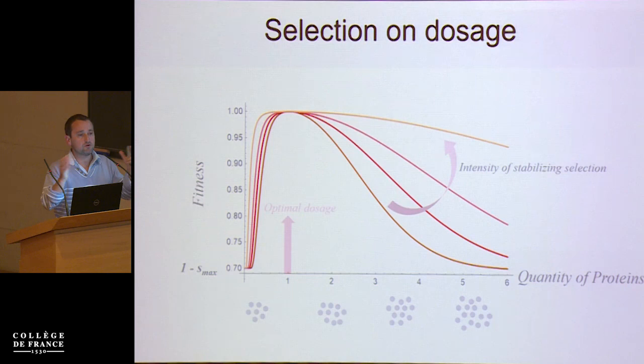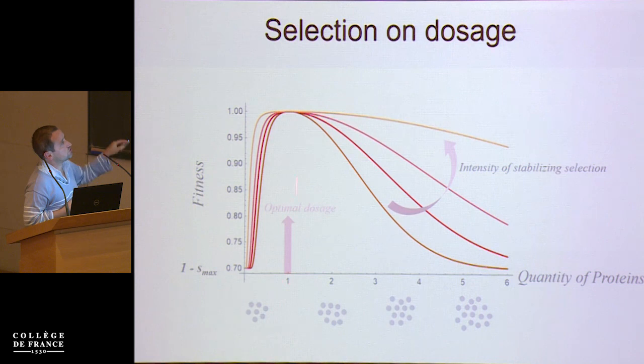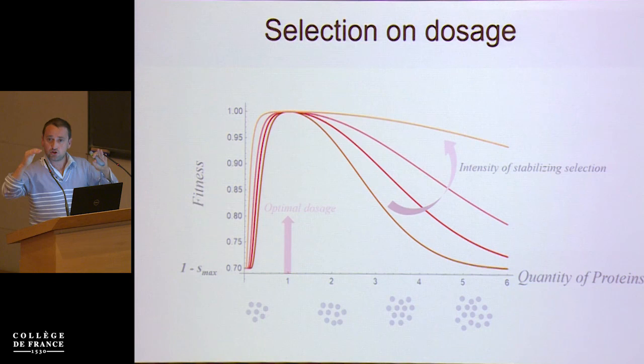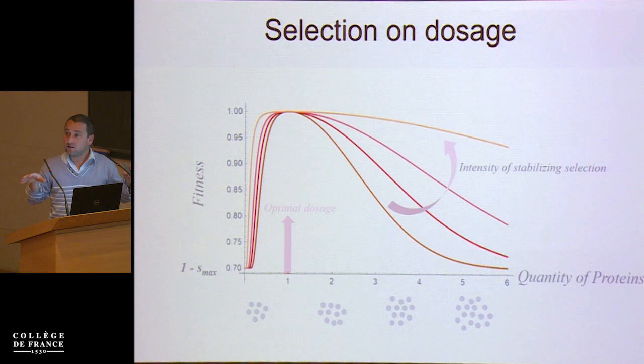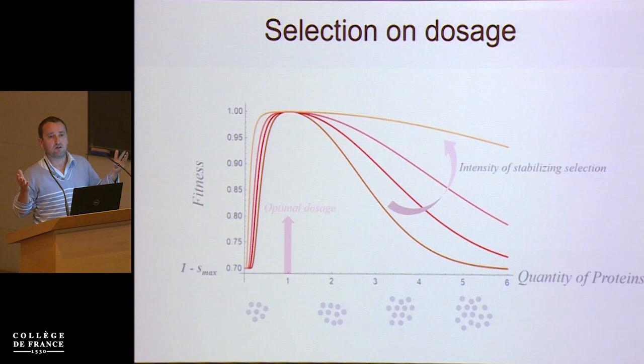The last bit is that you've got selection on dosage, because for each gene you assume there is an optimal quantity of protein to be produced — an optimal value set to one, so at the individual level the total optimum is two for two copies — and you've got a different intensity of stabilizing selection around that optimum. A very specific feature is that when you've got zero expression, meaning the gene is completely silenced, you don't want the fitness effect to be stronger than the maximal fitness effect you could have on the gene itself.